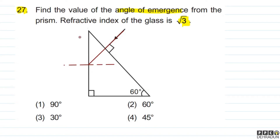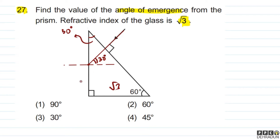Now, since this angle is 30°, this angle inside will also be 30°. So at this interface, the angle of incidence becomes 30°. The refractive index of this medium is root 3. We understand that since the ray is going from a denser to a rarer medium, it should bend away from the normal.